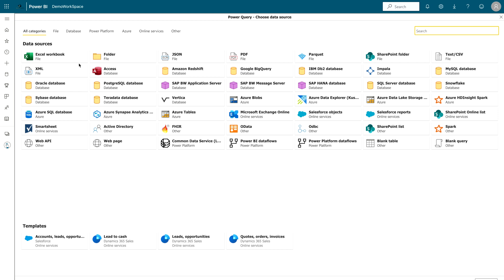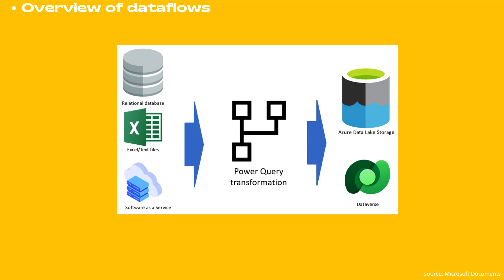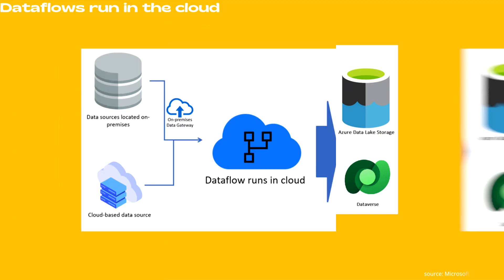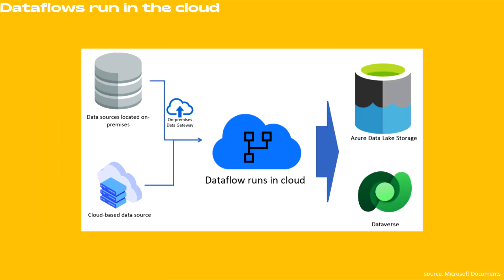Here you can select your Excel, folder, JSON, or any other kinds of data sources. Based on that you can create your data flow. When working on Power BI or Azure it will go to Azure Data Lake Storage, however if you are working on Power Apps or Power Automate then it goes to Dataverse.